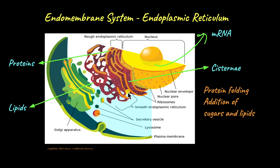Once the protein reaches the end of the RER, it is somewhat functional but still needs to be sent to its target location — that process is handled by the Golgi apparatus. The smooth endoplasmic reticulum, meanwhile, produces lipids such as waxes and steroids. Whatever is produced in the ER — whether in the RER or SER — has to go to the Golgi apparatus next so it can be sent to its target location. However, the ER and Golgi apparatus are not structurally linked to each other the way the ER and nuclear membrane are, so how can proteins and lipids be transported to the Golgi?